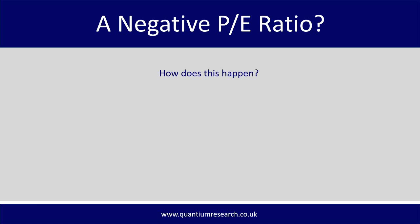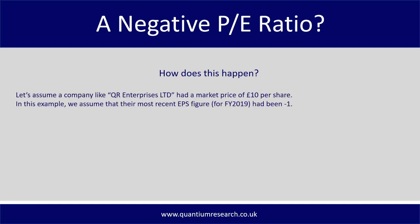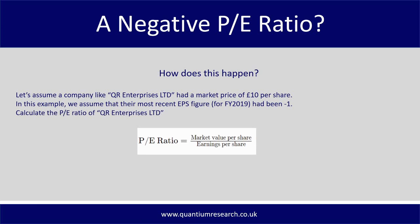A lot of people see a negative P/E ratio on sites like Yahoo Finance and panic, wondering how that makes sense. If a company like QR Enterprises Limited had a market price of £10 per share but had made a loss — so their earnings per share for full year 2019 was minus £1 — you calculate the P/E ratio by taking the market price of £10 and dividing it by the EPS of minus £1, giving a P/E ratio of minus 10. That's why algorithms produce a negative P/E calculation.